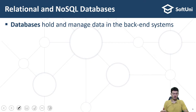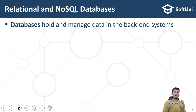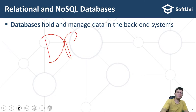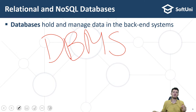Databases hold and manage data in backend systems. Almost all modern software systems use a database in some form. The data is organized in tables holding rows, or collections holding objects, key-value pairs, or other structures. The software which manages, retrieves, and manipulates data in the database is called a DBMS — Database Management System. Examples include MySQL, MongoDB, Redis, Azure Cosmos DB, PostgreSQL, MS SQL Server, Elasticsearch, and thousands more.